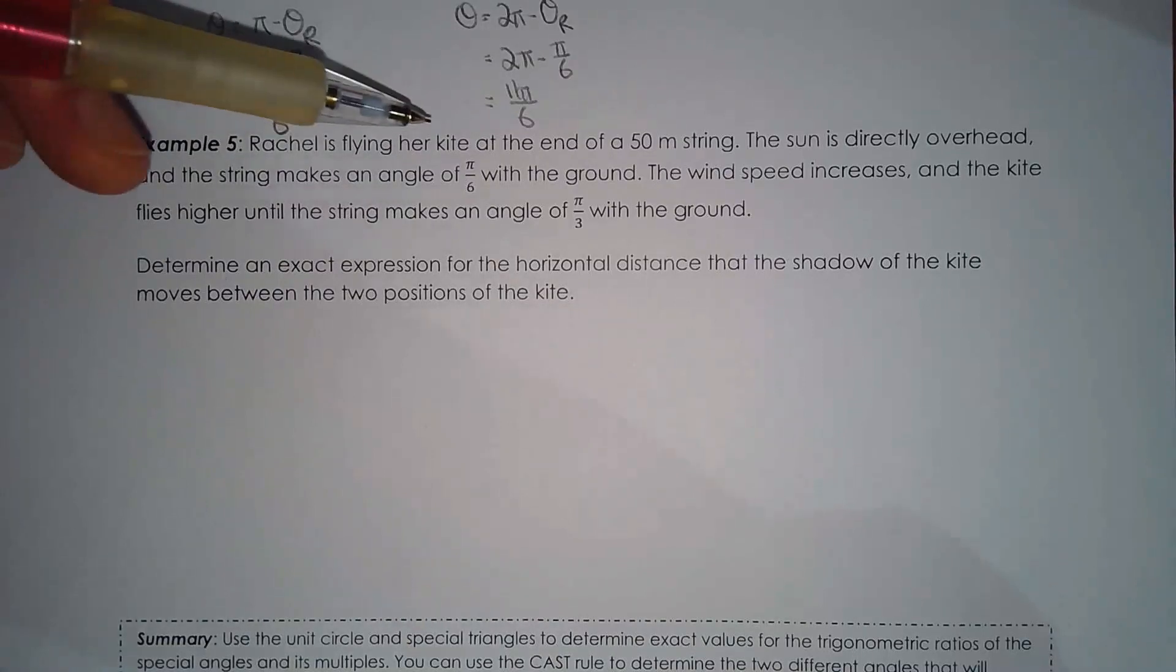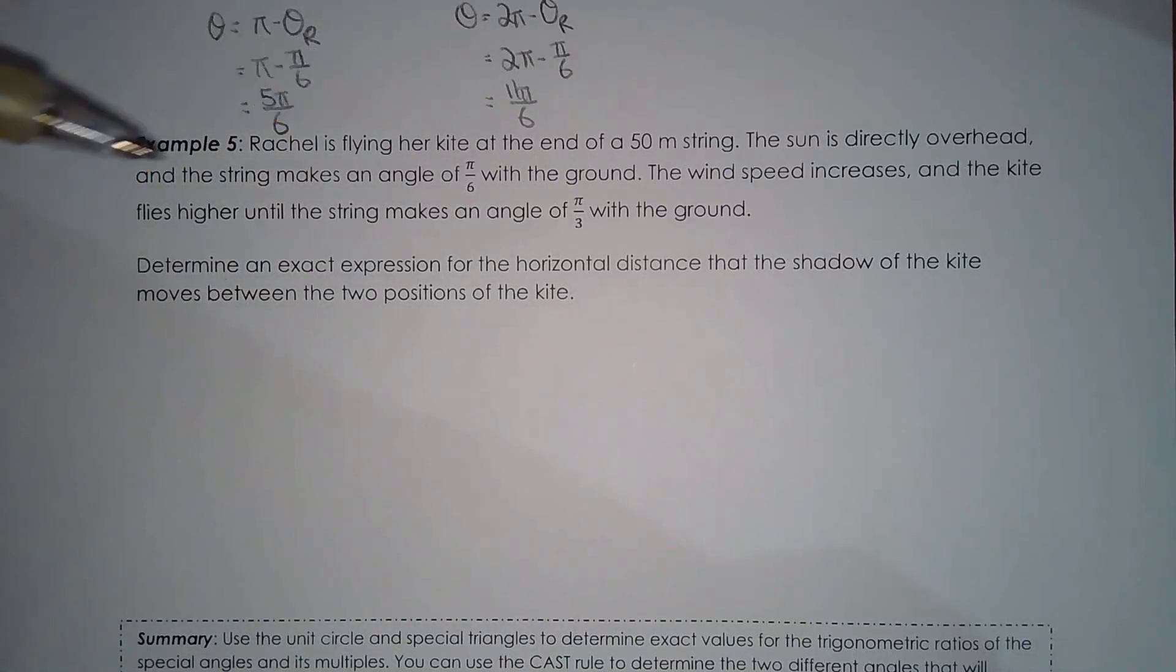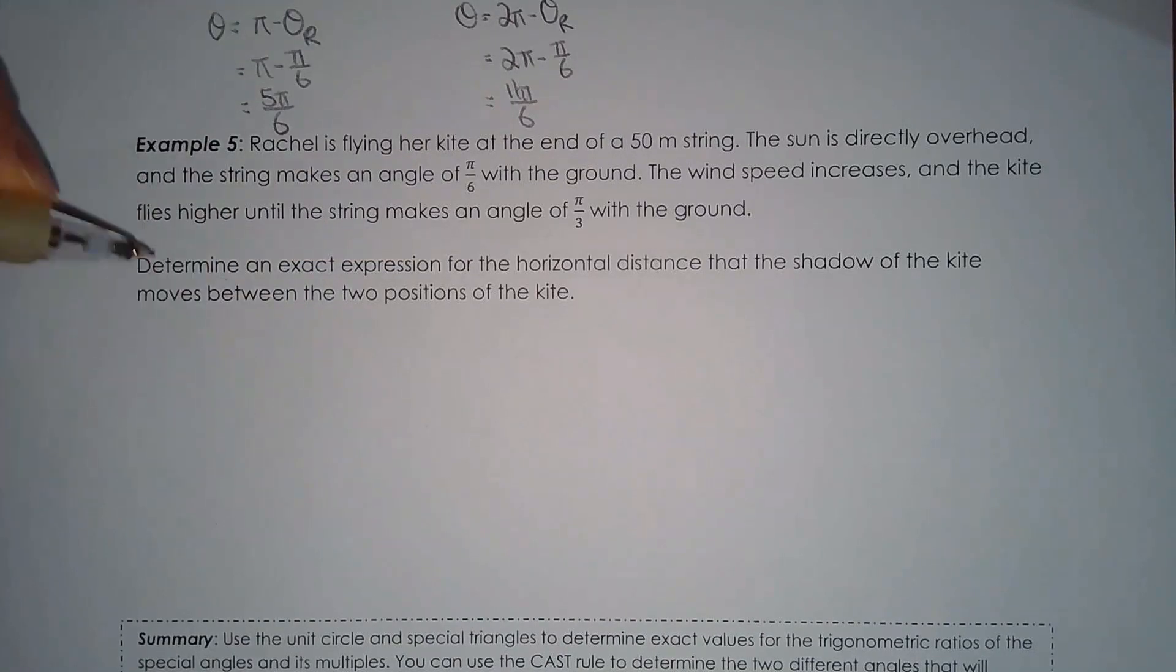Rachel's flying her kite at the end of a 50 meter string. The sun is directly overhead and the string makes an angle of pi over 6 with the ground. The wind speed increases and the kite flies higher until the string makes an angle of pi over 3 with the ground. Determine an exact expression for the horizontal distance that the shadow of the kite moves between the two positions of the kite.